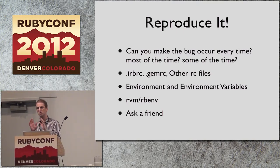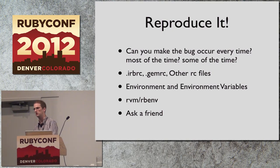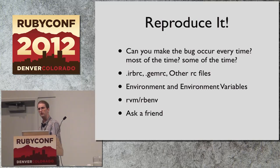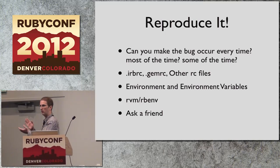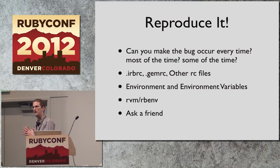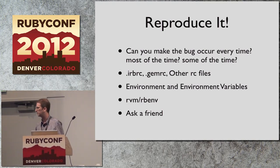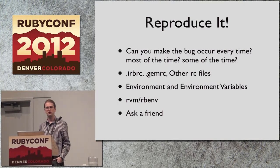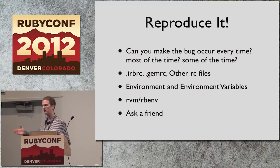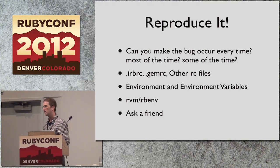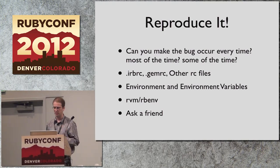Ruby can be influenced by a number of different configuration files — an .irbrc, a .gemrc, various other RCs, the environment you're running it in, the particular shell, shell configurations, environment variables. All of these things can have subtle effects on the way Ruby is running. A lot of people have been using RVM and RBN, and these also do a lot to the environment. The best thing you can do if you're trying to reproduce a bug is ask a friend. If two people see the bug, it's probably a bug.